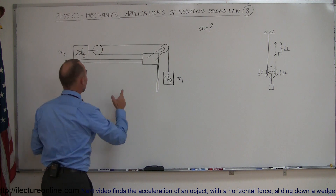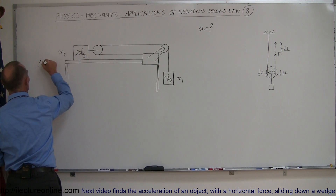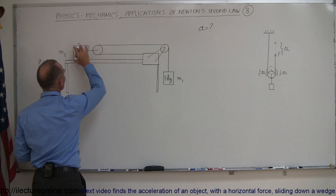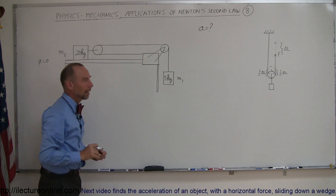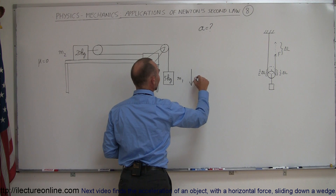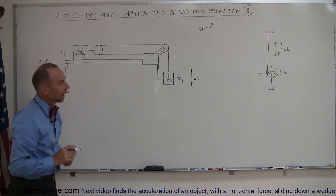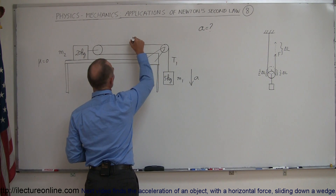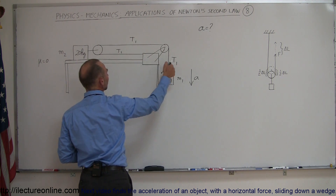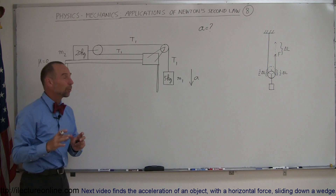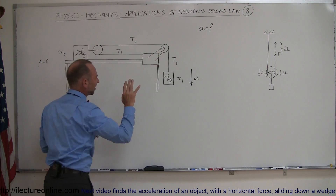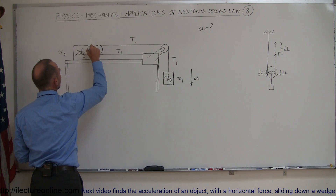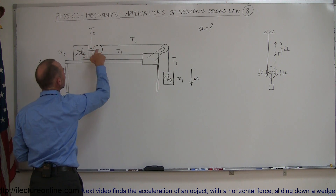If there's no friction — so mu equals zero between this mass and the table — this mass will begin to accelerate downward, which means that this mass will begin to accelerate to the right. The question is: what is the acceleration of this 5 kilogram block downward, and what is the tension in the string? This is tension one throughout the single string. But this tension over here — let's call it tension two — is not equal to tension one.